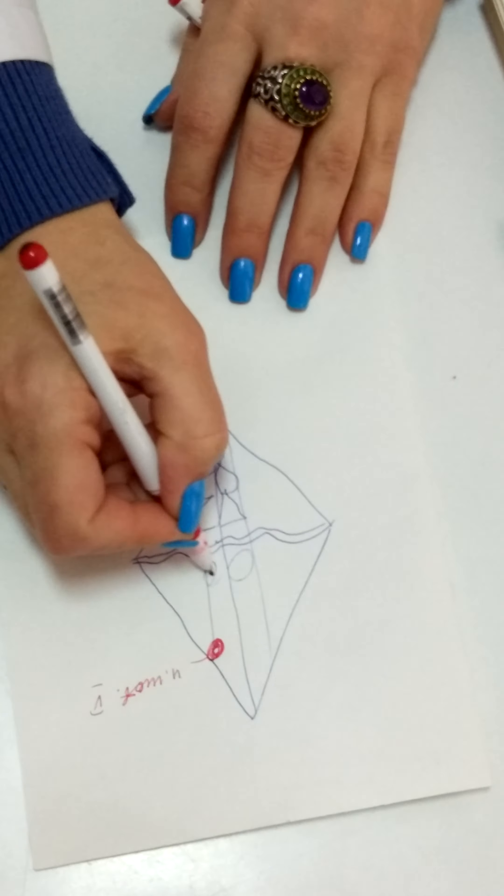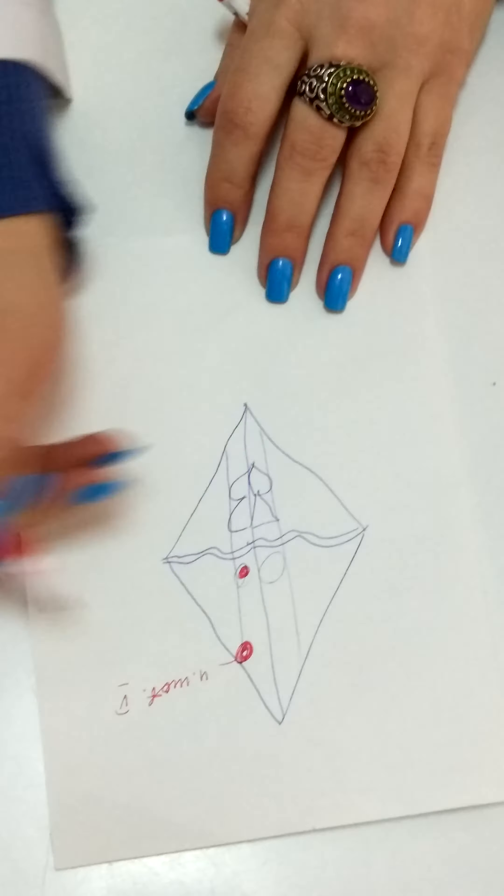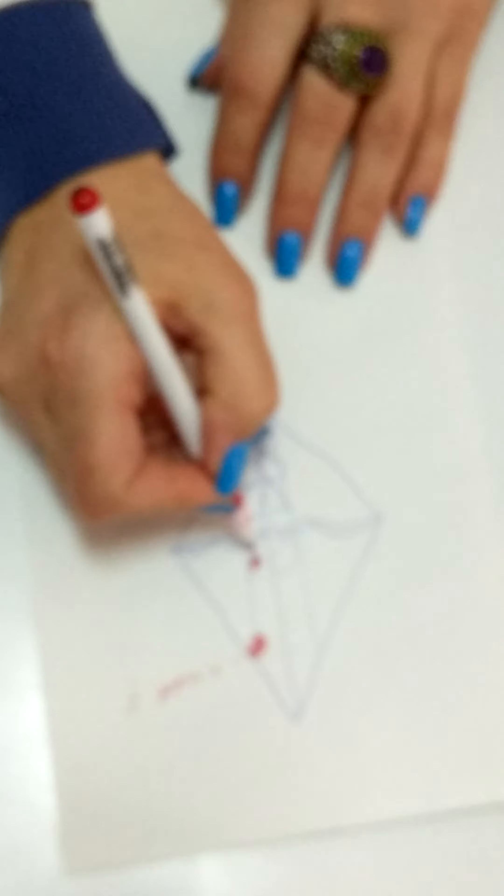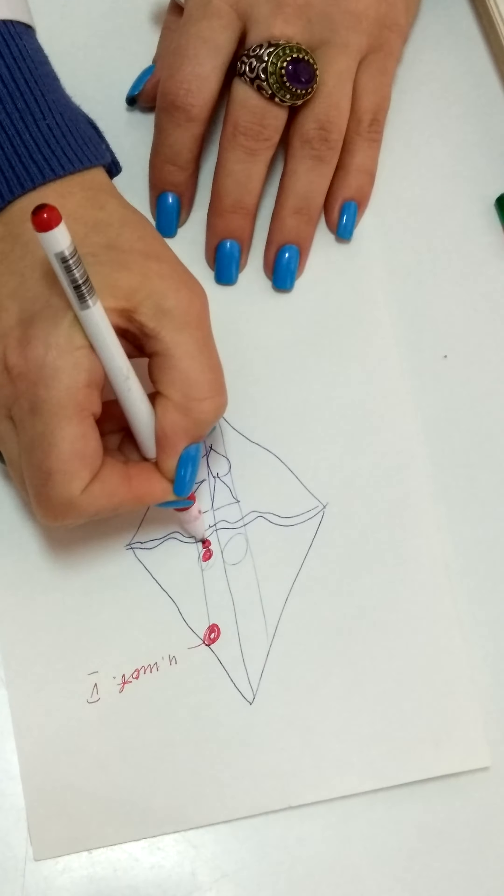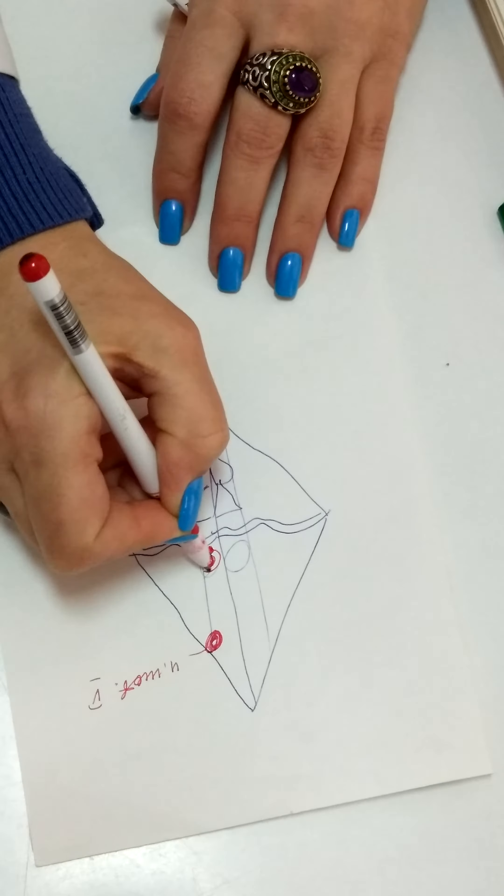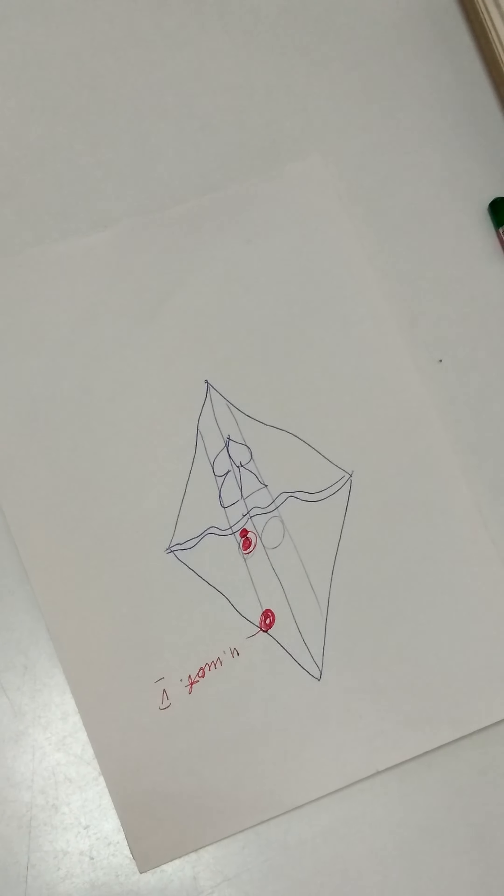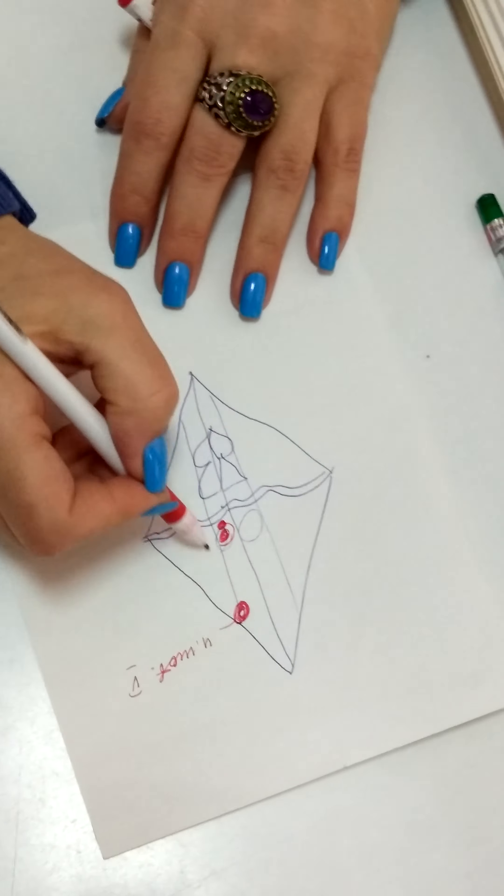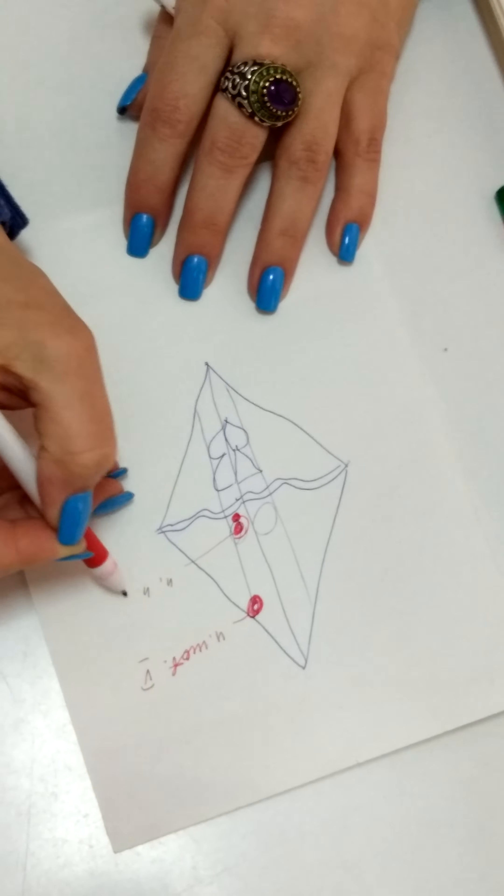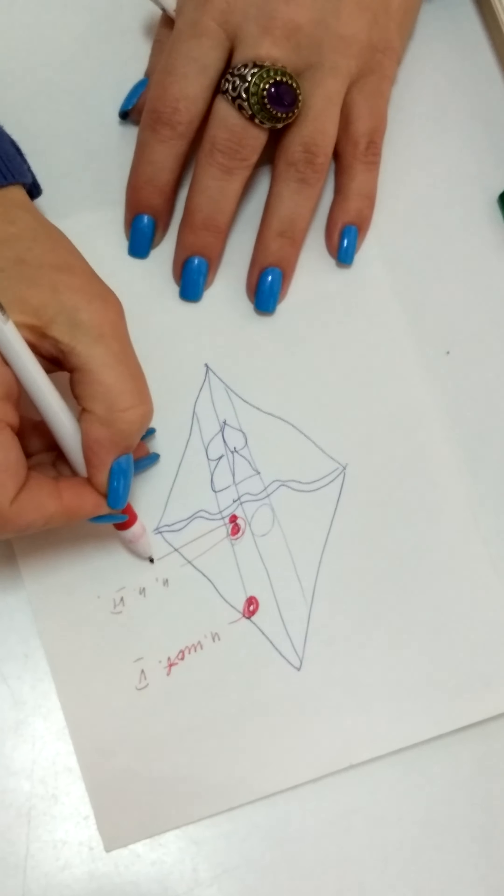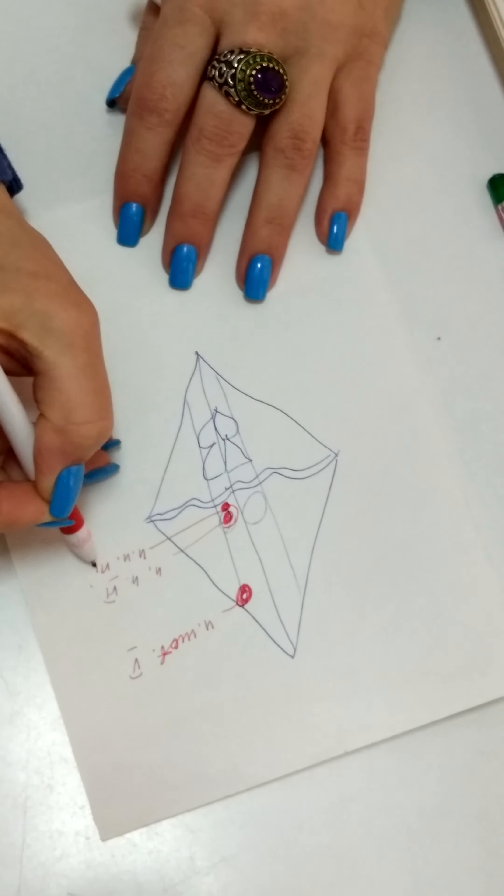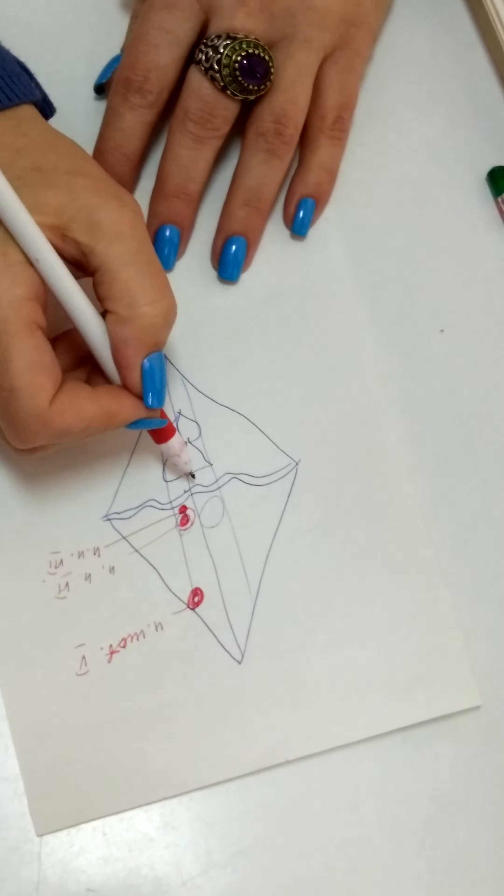Below collicles, nucleus nervi abducentis motor nuclei and nucleus facialis are located together, one deeper than the other. Nucleus nervi abducentis is sixth pair, nucleus nervi facialis is seventh pair.